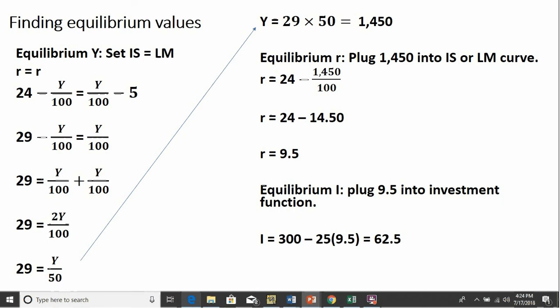To find the equilibrium level of investment, let's take this 9.5 and plug it into the investment function. And we get 62.5.